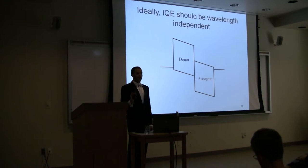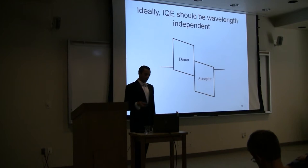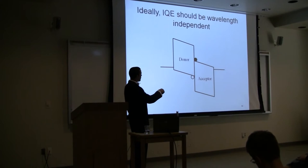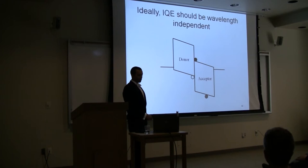Ideally, because we're normalizing by the absorption, the IQE should be wavelength independent. It's worth noting that the only way we would get wavelength dependence is if there's a difference between the absorption in the donor and the acceptor. Because whether we excite an electron in the donor and perform this charge transfer state, or if we excite an electron in the acceptor, once the exciton diffusion happens and the charge is separated, this is the exact same state in both cases.